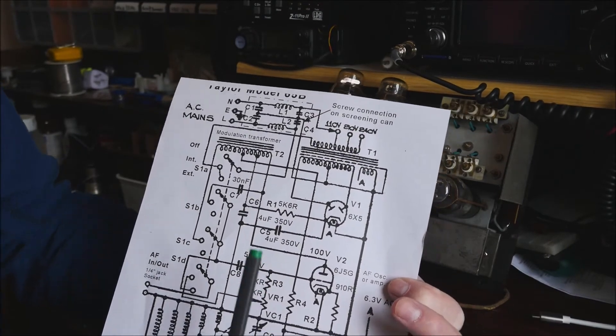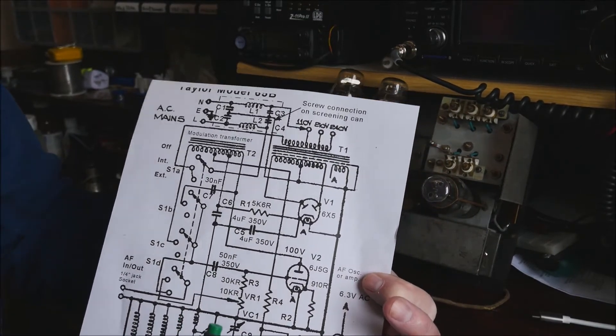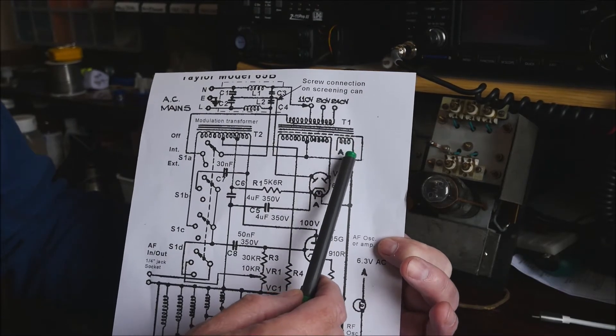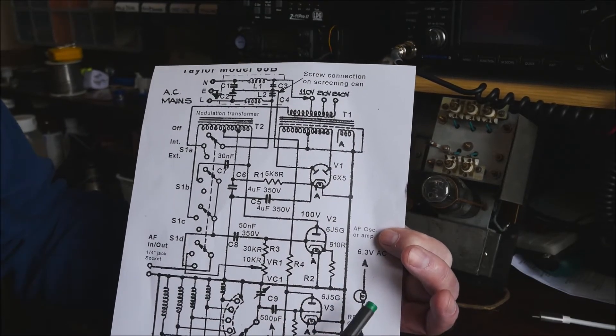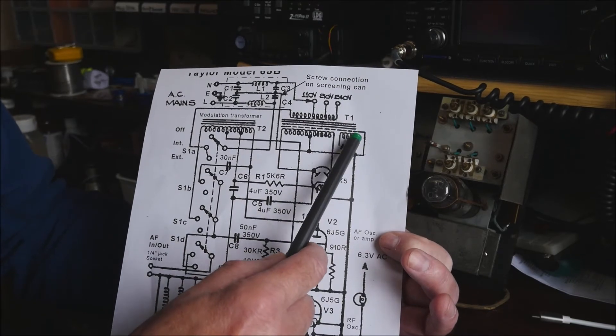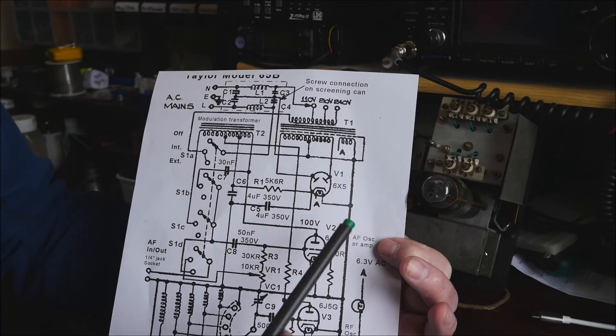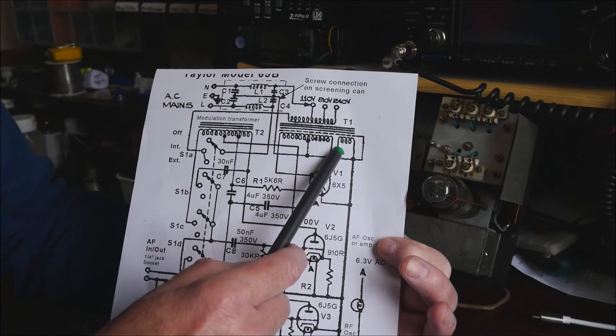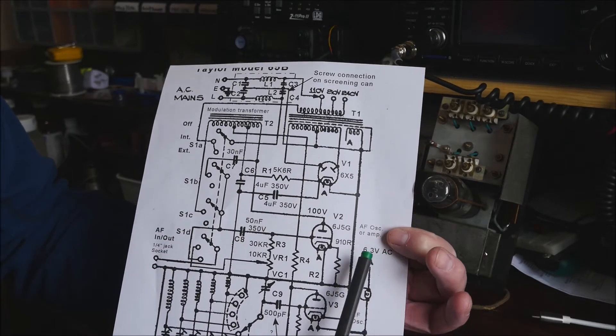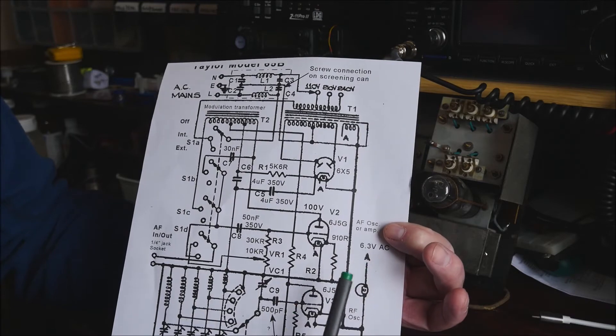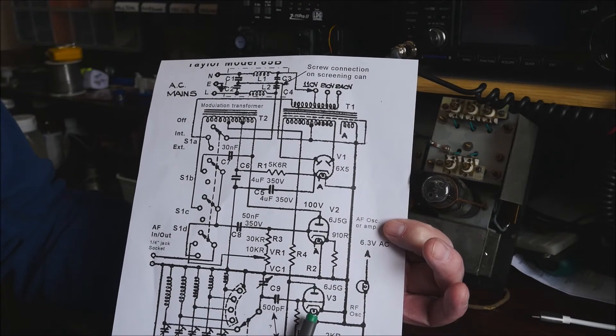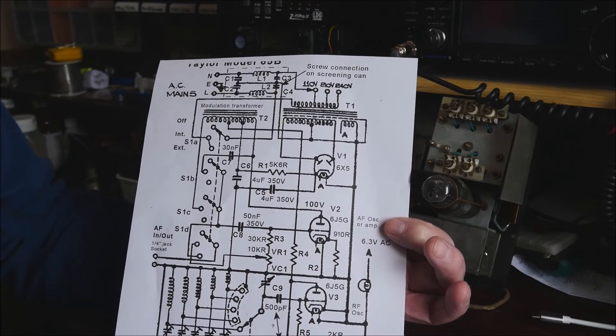And then there's two secondaries. The first secondary here provides 6.3 volts for the valve heaters and the dial light. So one side of that goes to the common ground and side marked A there goes to the dial light and also the heaters of each of the three valves. So that's an AC supply to heat them.